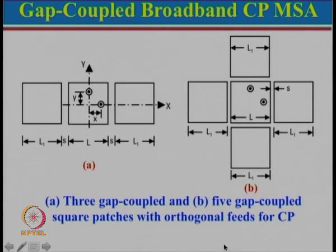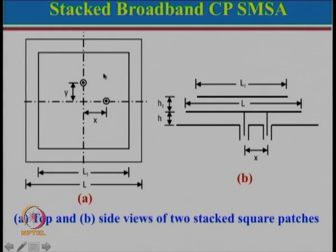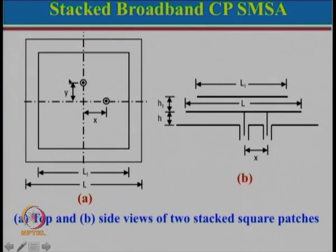Instead of going planar, one can also go vertical. Here is a stacked broadband circularly polarized square microstrip antenna: a square patch at the bottom layer, a square patch at the top layer, with everything in air to realize very broadband antenna. We can feed with one angle 0 and one angle 90, or one angle 0 and one angle minus 90 for RHCP. In the next lecture we will discuss more broadband configurations and see how circularly polarized antennas can be used in arrays, including the concept of sequentially rotated circularly polarized microstrip antenna, which gives very broadband circular polarization.